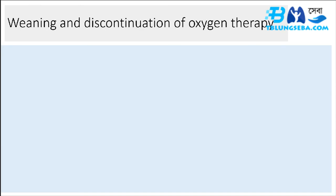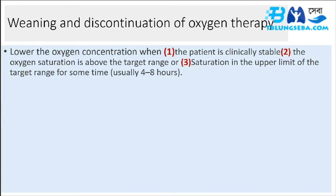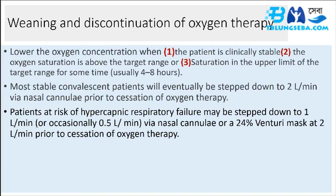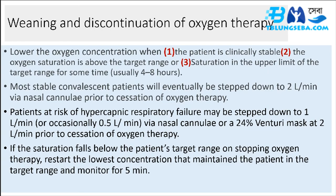Weaning and discontinuation of oxygen therapy: lower the oxygen concentration when the patient is clinically stable, oxygen saturation is above the target range, or saturation has been in the upper limit of the target range for some time (usually 4 to 8 hours). Most stable convalescent patients will be stepped down to 2 L/min via nasal cannulae prior to cessation. Patients at risk of hypercapnic respiratory failure may be stepped down to 1 L/min or occasionally 0.5 L/min via nasal cannulae or a 24% Venturi mask at 2 L/min. If saturation falls below target on stopping oxygen, restart the lowest concentration that maintains the patient in the target range and monitor for 5 minutes.